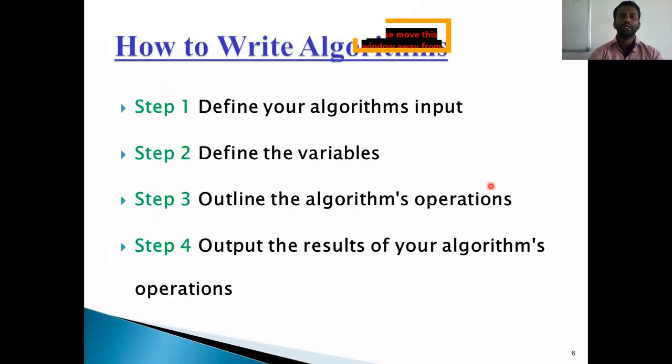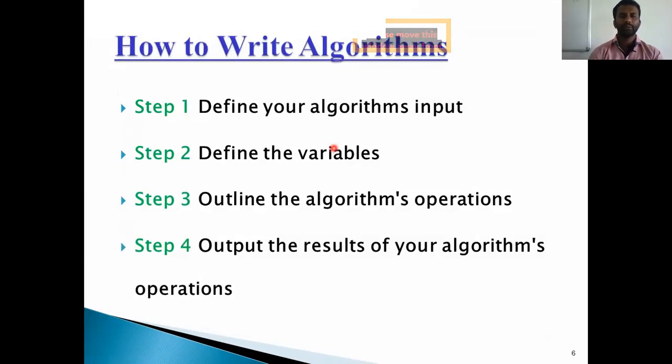How to write algorithms? First step, we want to define. Step 1: define your algorithm's input. Step 2: define the variables. Step 3: outline the algorithm's operations. Step 4: output the results of your algorithm's operations.